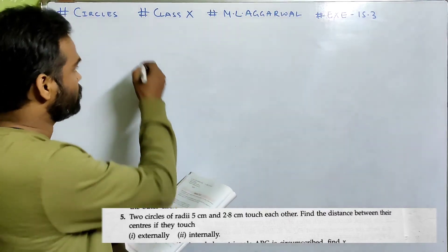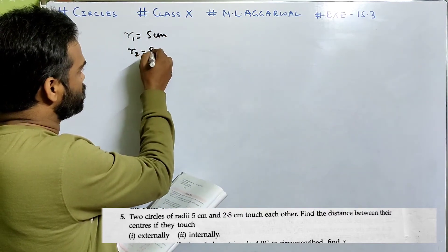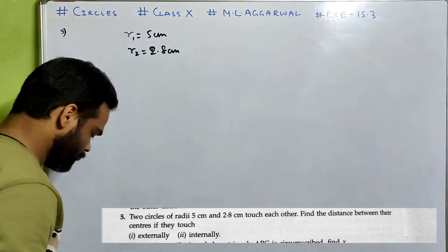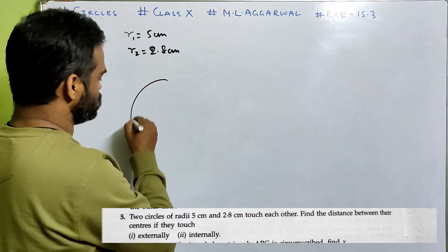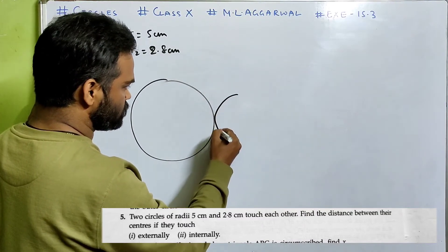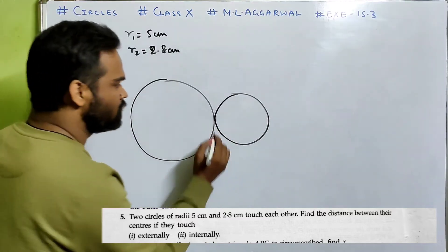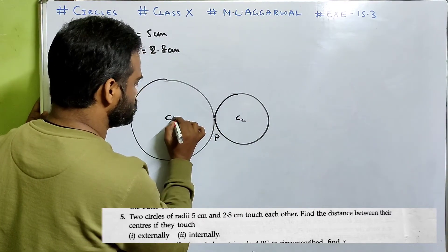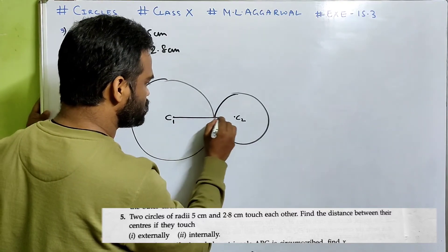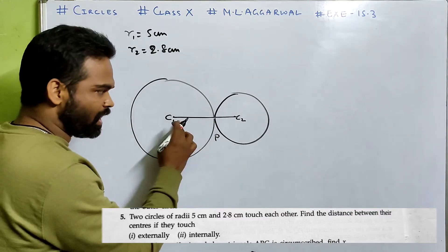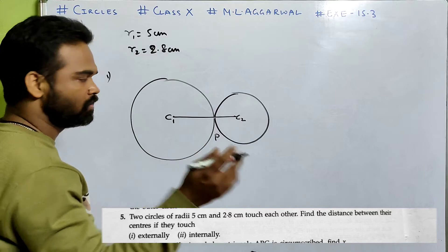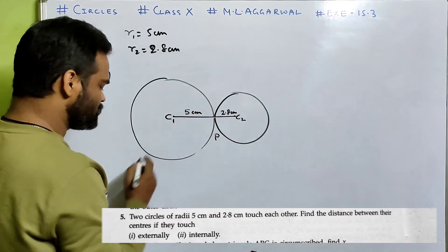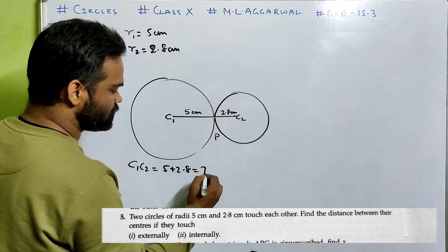Look at number 5. Two circles of radii 5 cm and 2.8 cm touch each other. Find the distance between the centers if they touch externally and internally. When they touch externally, the point of contact and the centers lie on the same straight line. So C1C2 = 5 + 2.8 = 7.8 centimeters.